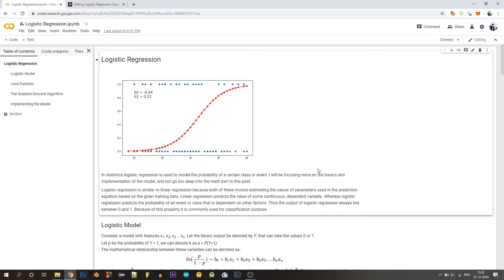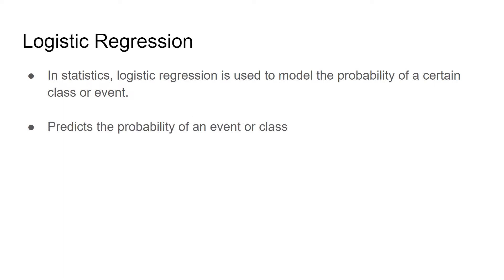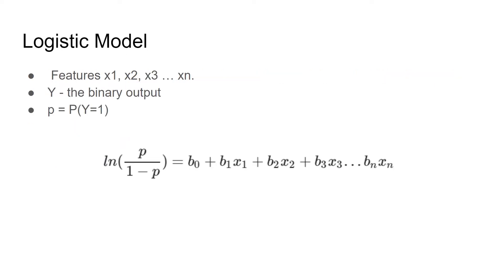So what is logistic regression? In statistics, logistic regression is used to model the probability of a certain class or event. Logistic regression is similar to linear regression because both involve estimating the values of parameters used in the prediction equation, based on some given training data. Linear regression predicts the value of a continuous dependent variable, whereas logistic regression is used to predict the probability of a class or event. The output of logistic regression always lies between 0 and 1, and because of this property it is usually used for classification purposes.